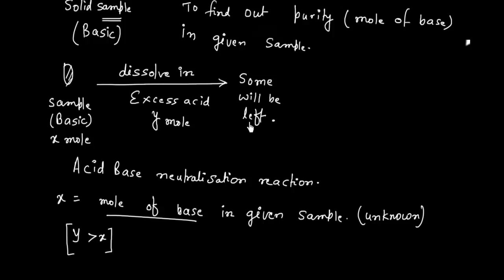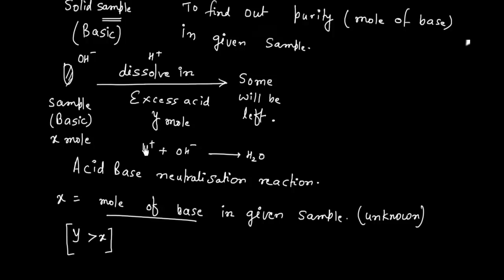How many moles of acid will be left? If we assume the base gives 1 OH⁻ and the acid gives 1 H⁺, we have the neutralization reaction H⁺ + OH⁻ → H₂O. So 1 mole of base is neutralized by 1 mole of acid, meaning the moles of acid left are y minus x.